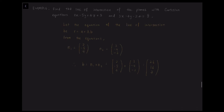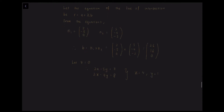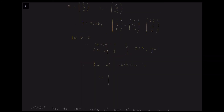Setting z = 0, we obtain 2x − 5y = 3 and 3x − 4y = 8. Solving this simultaneous system gives x = 4 and y = 1. So with the point (4, 1, 0) and direction vector b = (26, 16, 7), the line of intersection is r = (4, 1, 0) + λ(26, 16, 7).